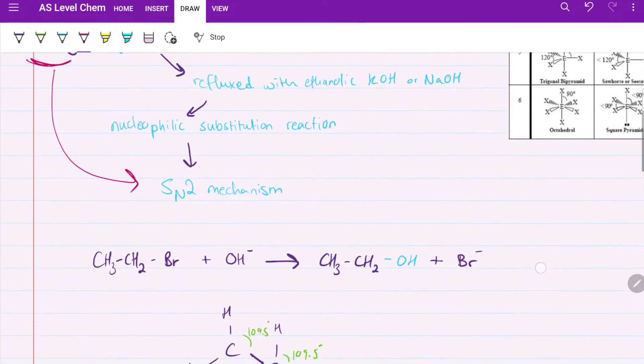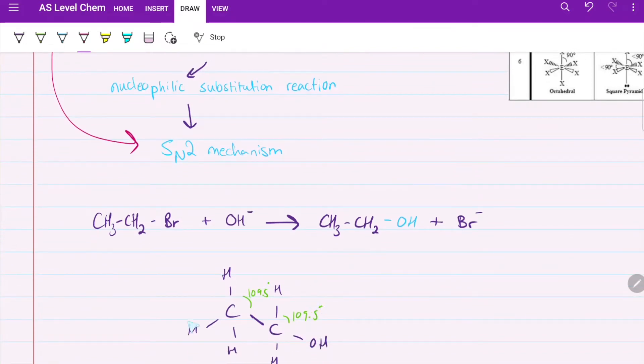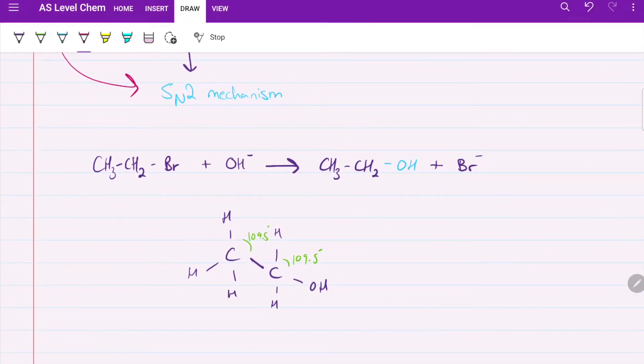This is the ionic equation. We have bromoethane, CH3-CH2-Br, ethane has two carbons and the bromine substitutes one of the hydrogens. Carbon can form four bonds. Then we have OH- from the sodium hydroxide. All we have to do is substitute them. We have ethanol, which is an alcohol with two carbons attached.